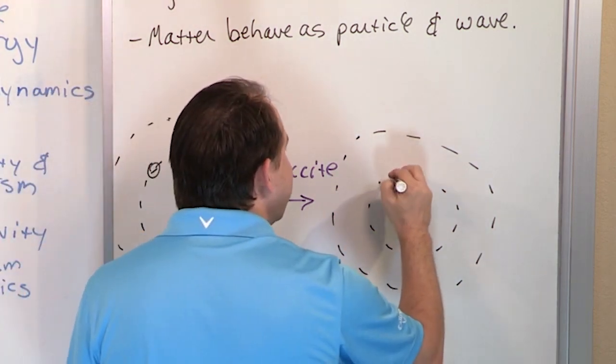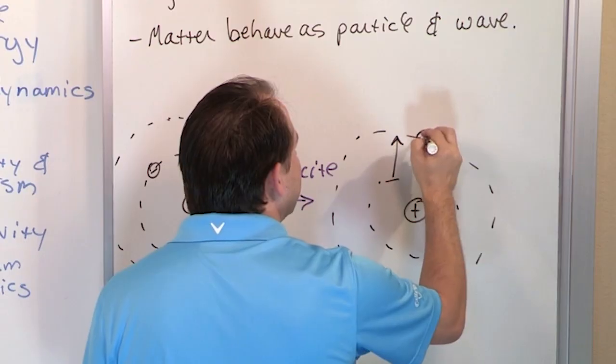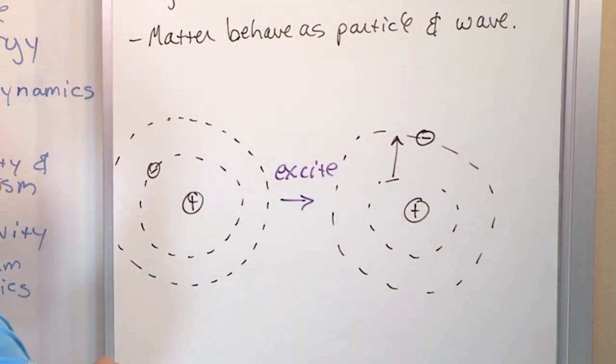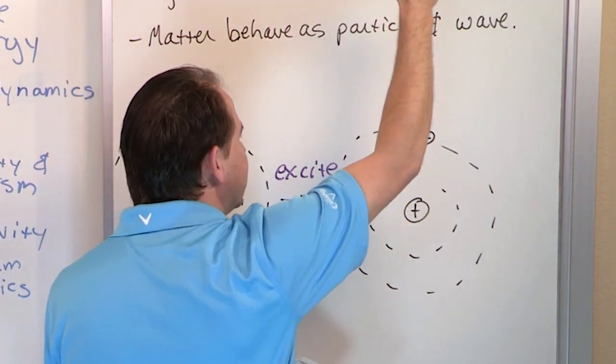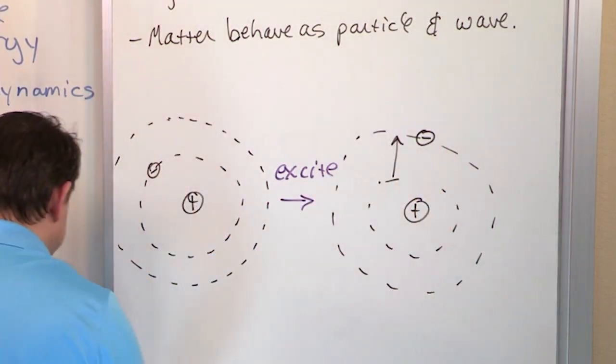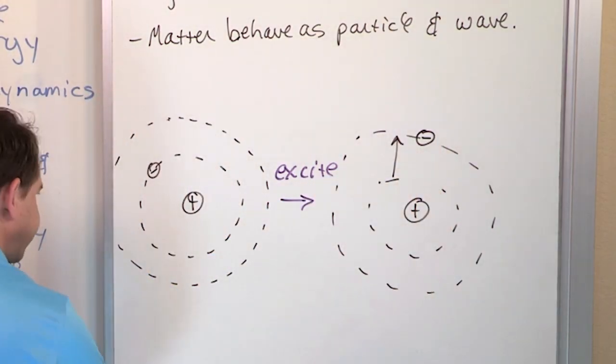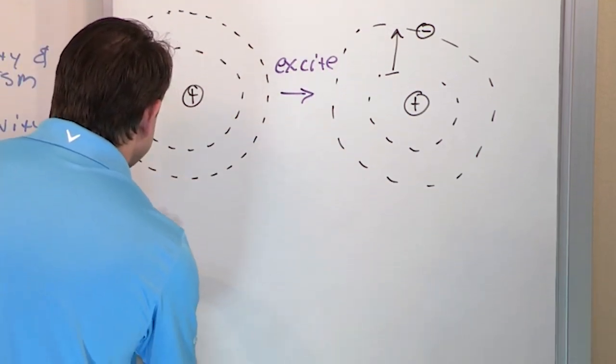And the electron, when I excite it with electricity, is going to move from this guy. It's going to pop up temporarily to the higher energy state. But it's not going to stay there forever. As soon as I stop exciting it, it's going to decay right back down to the lower energy state that it likes to live in.